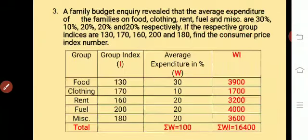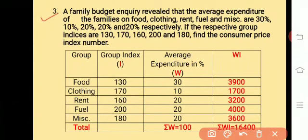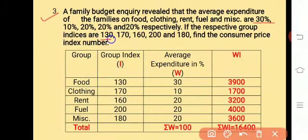The third question: a family budget inquiry revealed that average expenditure of families on food, clothing, rent, fuel, and miscellaneous are 30%, 10%, 20%, 20%, and 20% respectively. The respective group indices are 130, 170, 160, 200, and 180. Find the consumer price index number.